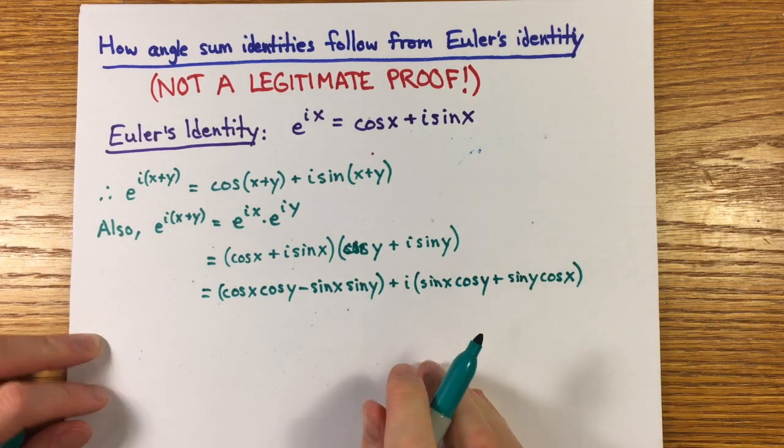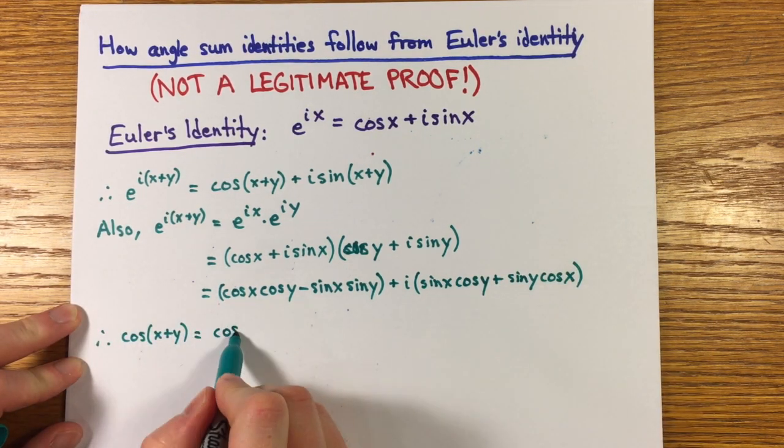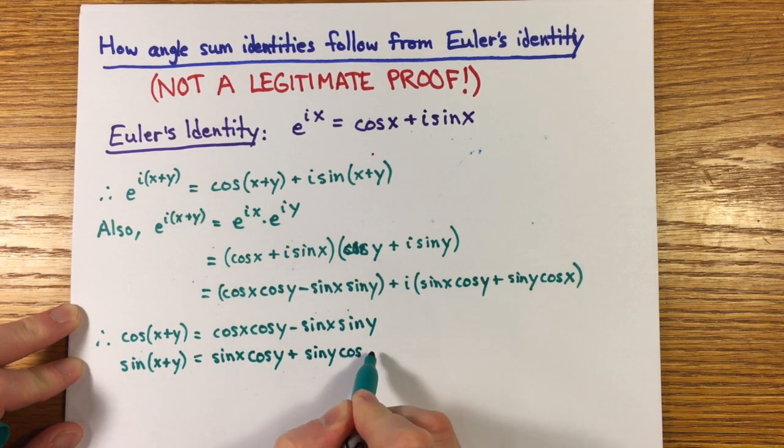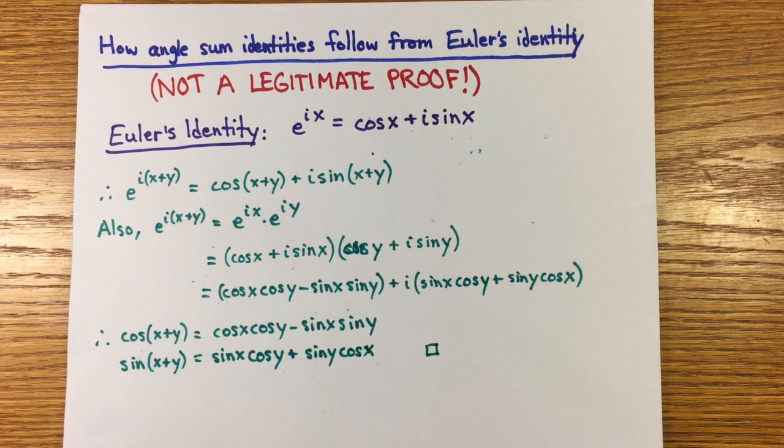So this proof is true, and it's a very efficient way to remember these identities, but it's a completely illegitimate way of establishing these identities for the first time. Anyone who presents the angle sum identities in this way to a calculus class is not thinking carefully about what it takes to establish the Euler identity they're making use of.